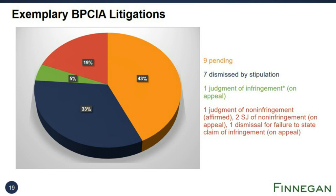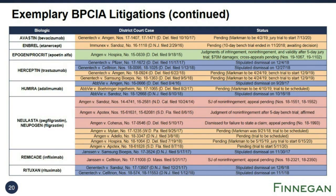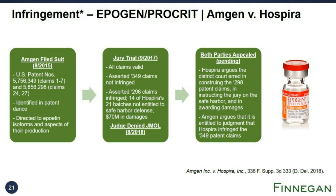I'd like to look at the one infringement decision (in green) and the four non-infringement decisions (in red). The infringement decision is from the District of Delaware in 2018 and is currently on appeal. After Hospira filed an abbreviated biologic license application for an epigen biosimilar, Amgen sued Hospira for infringement of patents identified during the patent dance. The jury found all claims valid, the asserted claims of one patent not infringed, and the asserted claims of another patent infringed. The jury further found that 14 of Hospira's 21 batches were not entitled to the Safe Harbor defense and awarded Amgen $70 million in damages. The judge denied both parties' motions for judgment as a matter of law, and both parties appealed.